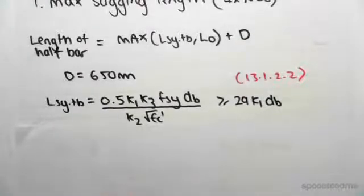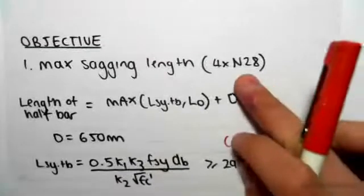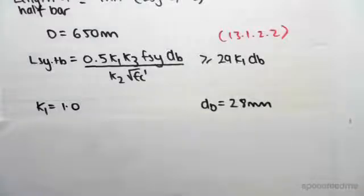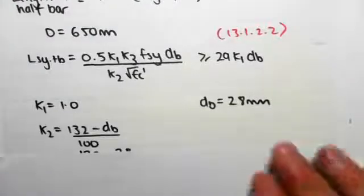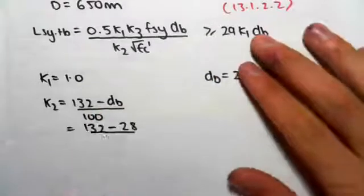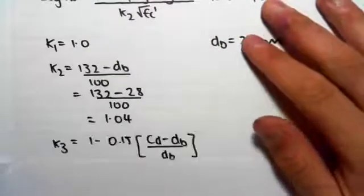Now k1 is just 1.0. db is the diameter of the bar because we have 4N28 for the maximum sagging. The diameter of the bar is 28 mils. k2 is 132 minus db on 100. db is 28, so just subbing that in, solving that we get 1.04.